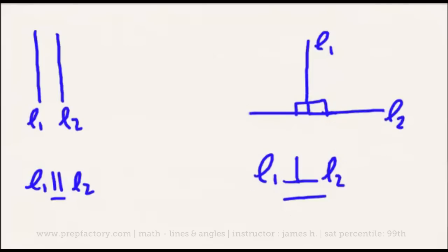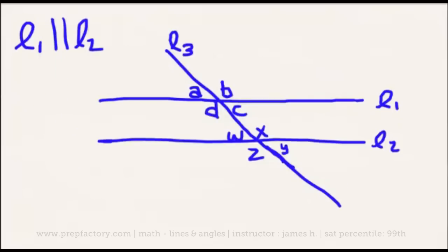Now that we've covered parallelism and perpendicularism, we're ready to move on to some of the implications of parallel lines. As you can see, I've drawn another pictorial representation, this one of probably something like a diagram we might see on an SAT question. Lines one and two are parallel, as written, and line three goes through them at some sort of an angle.